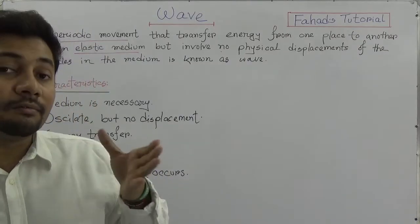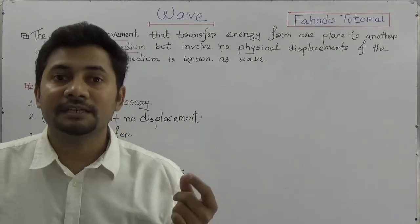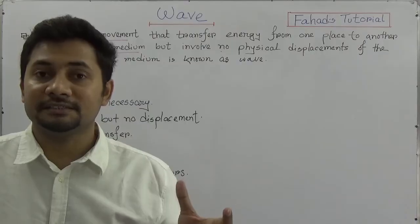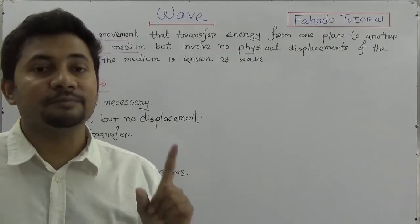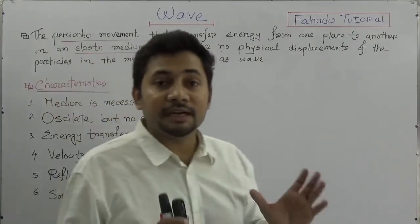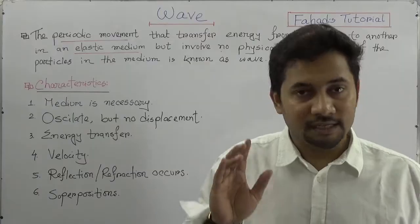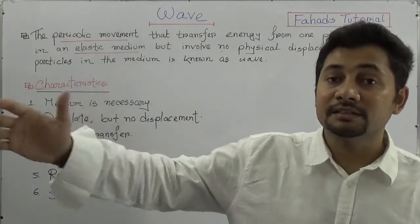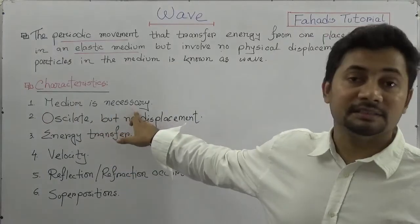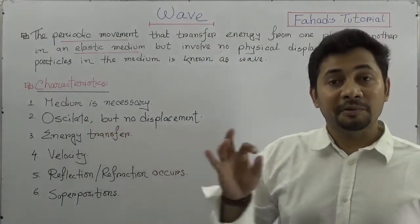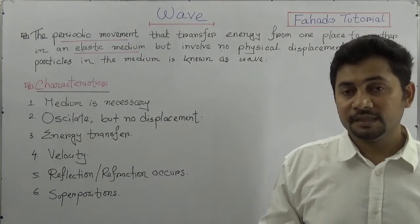When waves propagate from one place to another, the oscillations and vibrations of the particles of the medium take certain directions, and that actually determines the types of waves. Before explaining the types of waves, we need to think about the characteristics of waves. The key points are: first, a medium is necessary — wave transfers energy from one place to another through an elastic medium. Second, the particles of the medium will oscillate but no permanent displacement will happen.